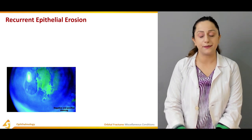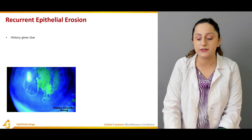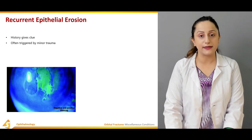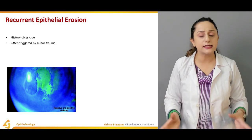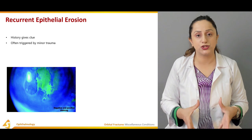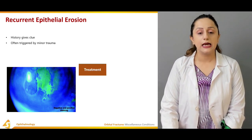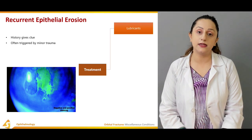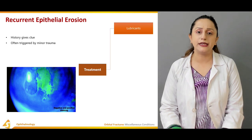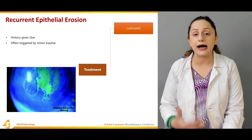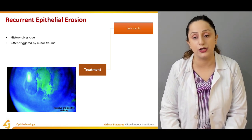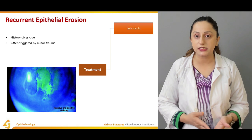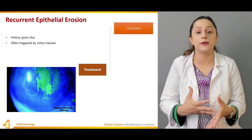Regarding recurrent epithelial erosions, the history gives clues as they are often triggered by minor trauma. Even a plant or fingernail scratch can cause these epithelial erosions. The treatment depends on the causative factors — recurrent epithelial erosions can be caused by scratching, nail injuries, constant rubbing, or even the eyelids and lashes themselves. The underlying causative factor must be identified and treated, and lubricants are given to the patient to form a complete tear film.